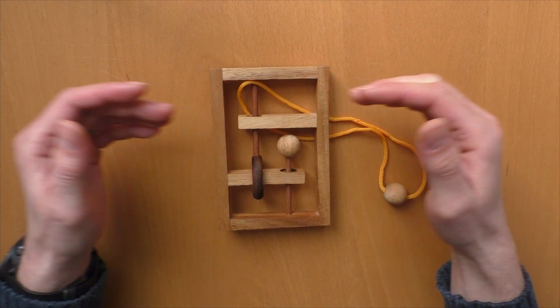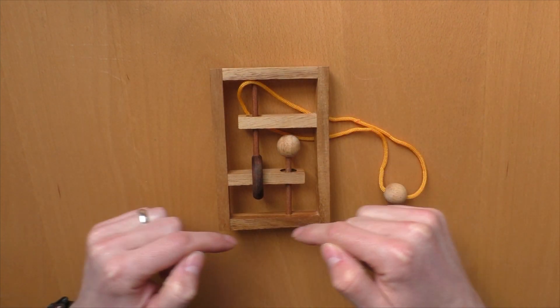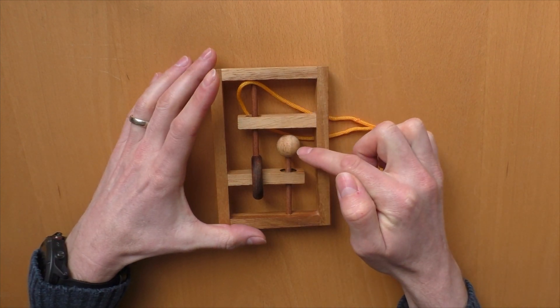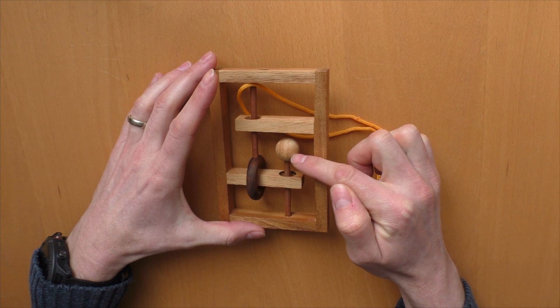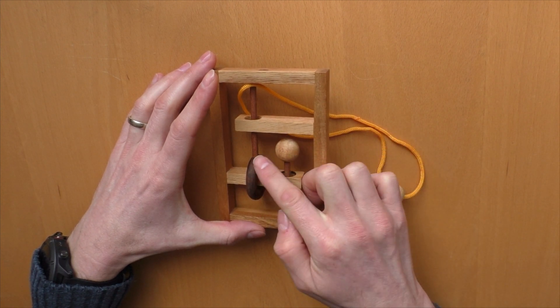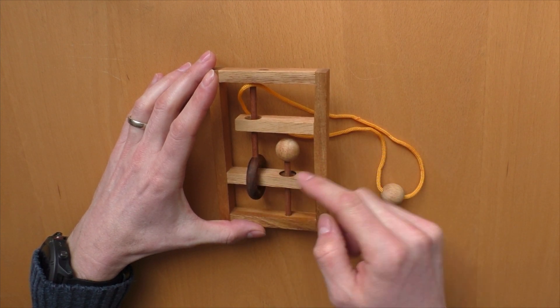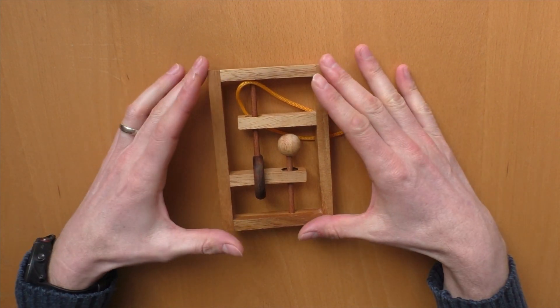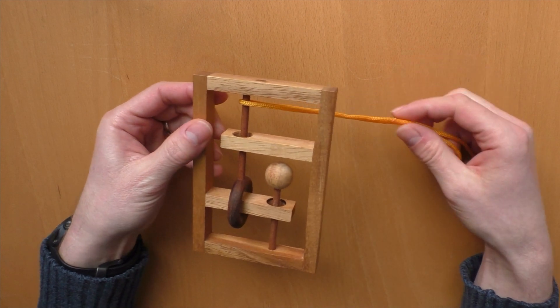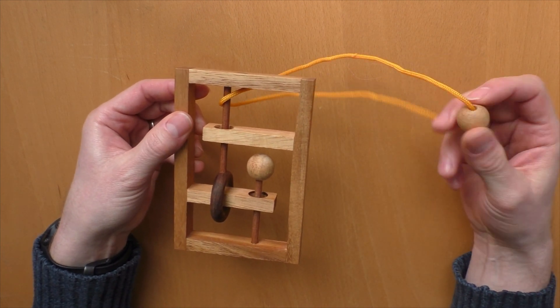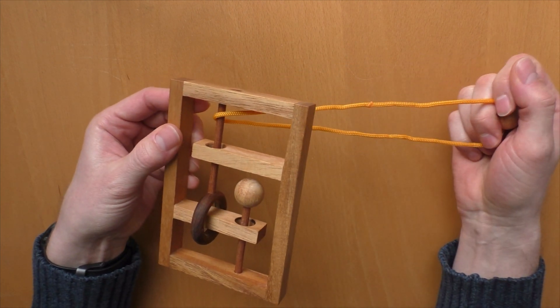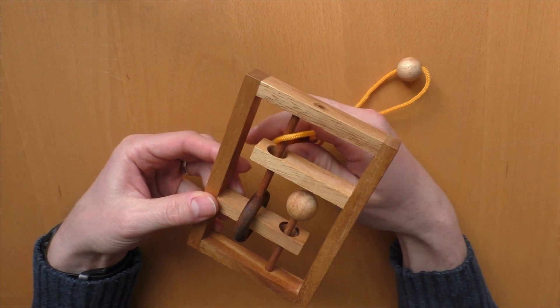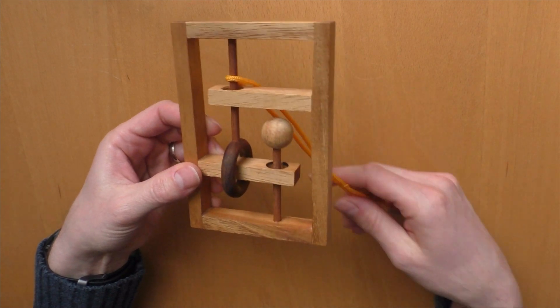So the puzzle itself consists of a wooden frame with two sticks attached inside. One stick on the top has a wooden ball. The other one has a wooden ring on the top. And the task here is to free the cord from this puzzle, that you can take it apart, and attach it again, that it's in the same condition as in the beginning.